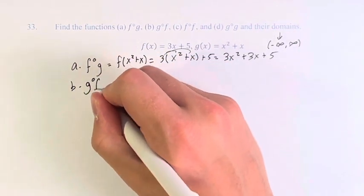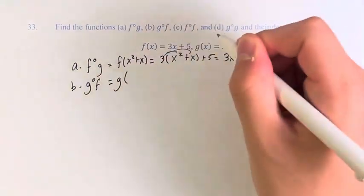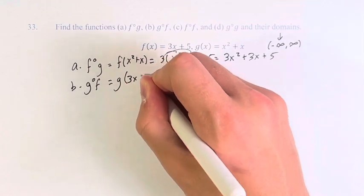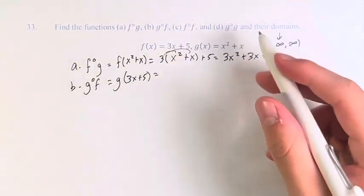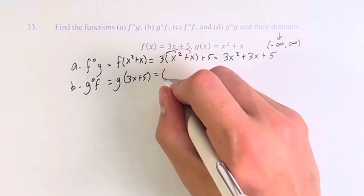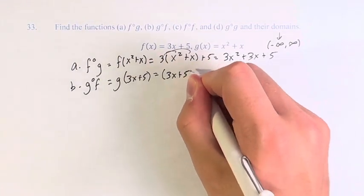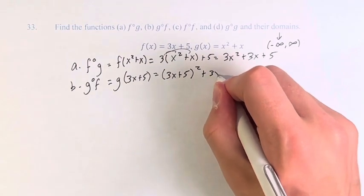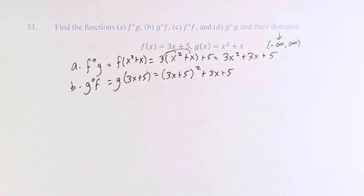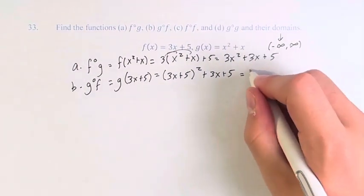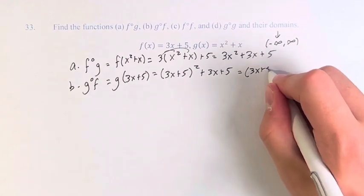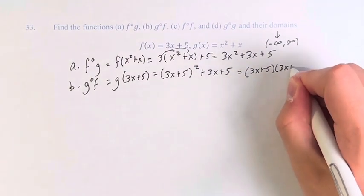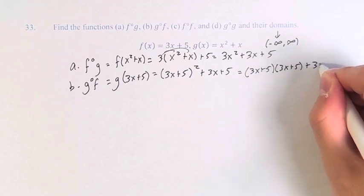B, g of f. So we have g of f of x, which is three x plus five. So therefore, we plug three x plus five into g of x. So you have three x plus five squared, plus three x plus five. Three x plus five times three x plus five, plus another three x plus five.